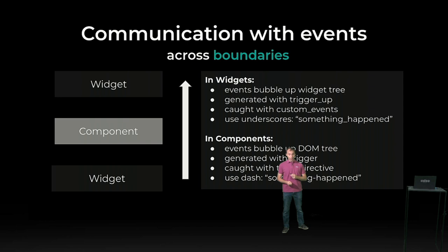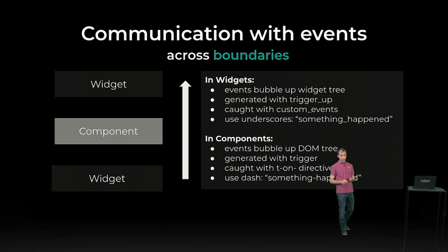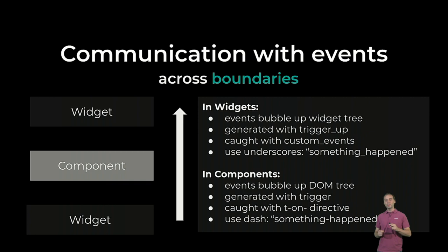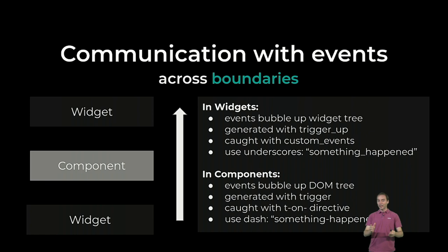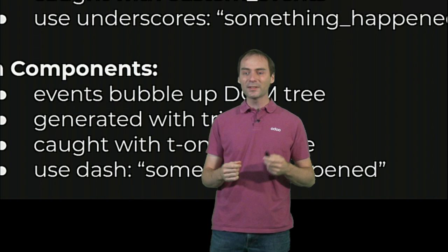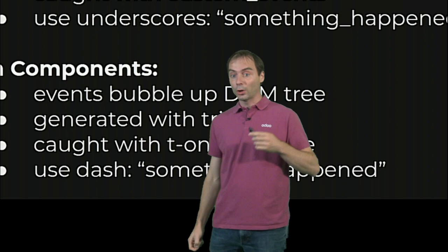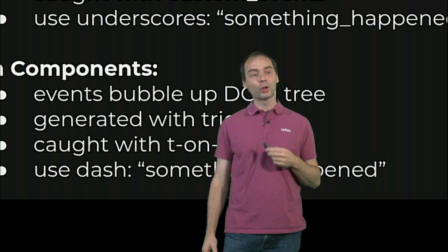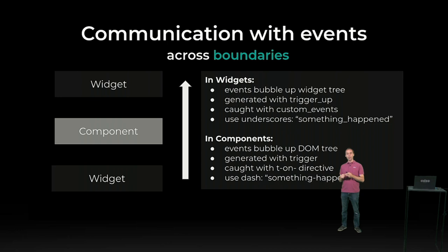Another significant problem is communication. We have two different systems of communication between widgets and between components — they are not compatible. You need to be able to communicate across boundaries, because the situation will arise when you have a widget containing a component containing another widget. The old widget custom events bubble up the widget tree, generated with a trigger-up method, handled with custom event handlers, and use underscores to separate words.